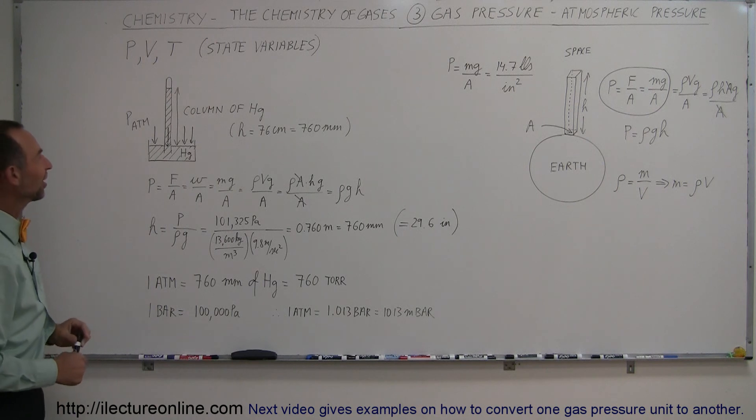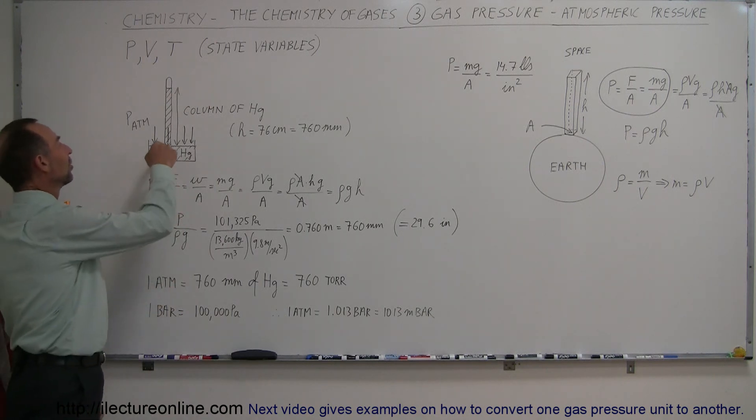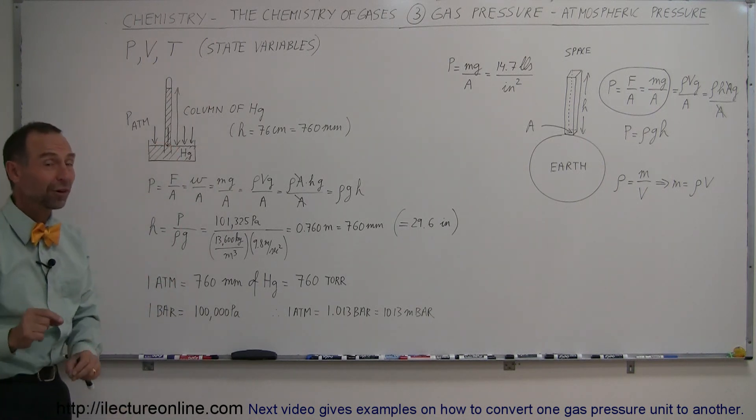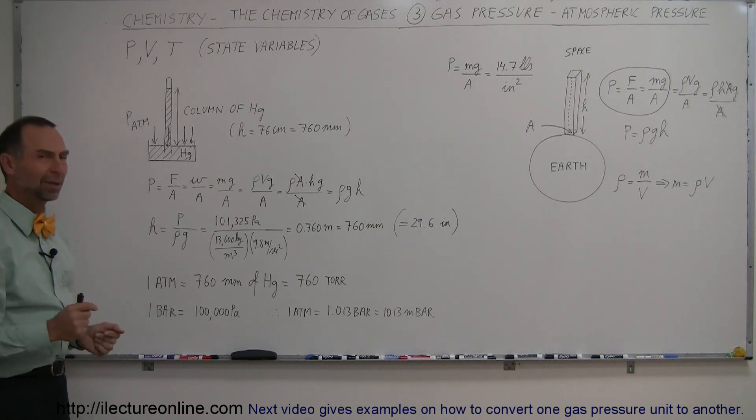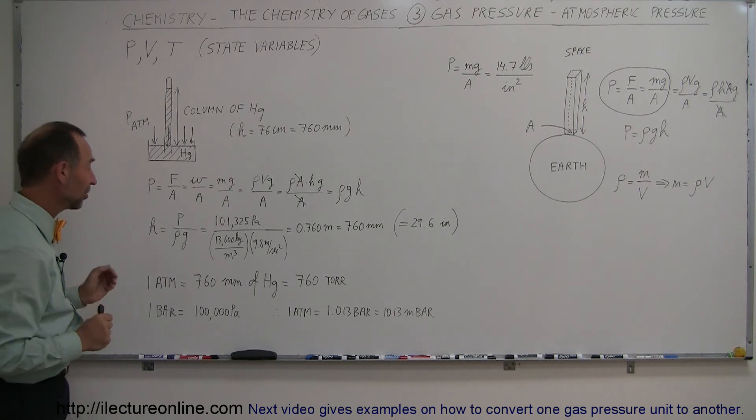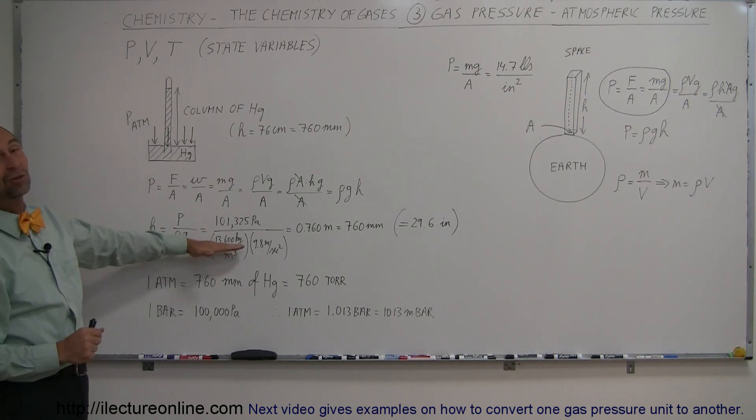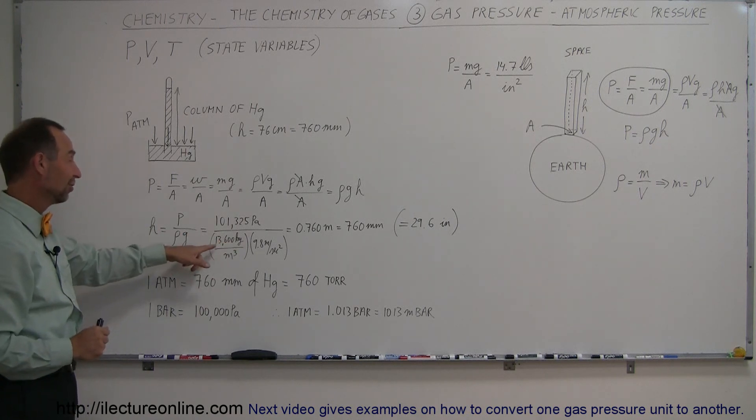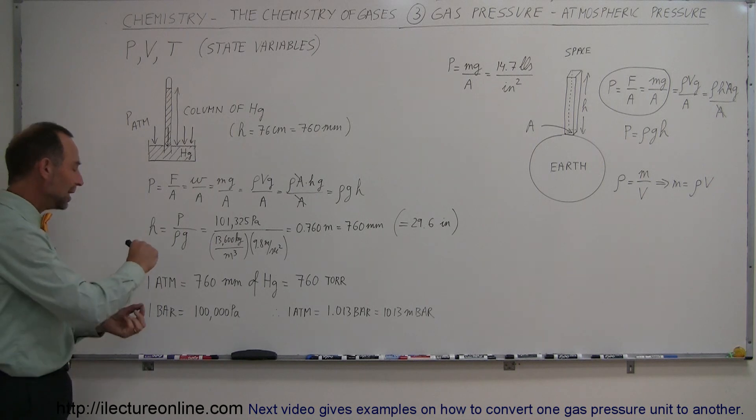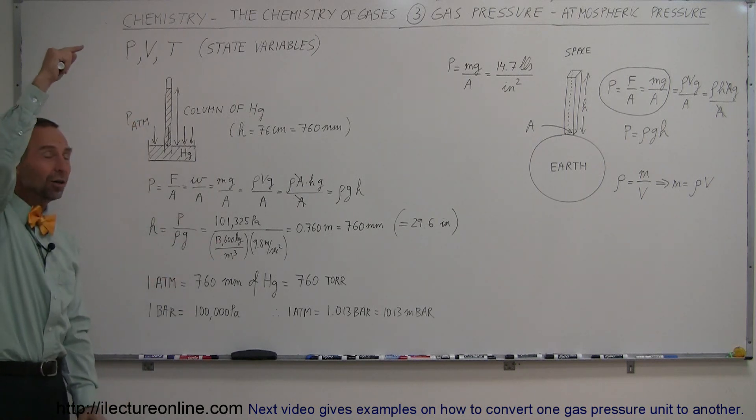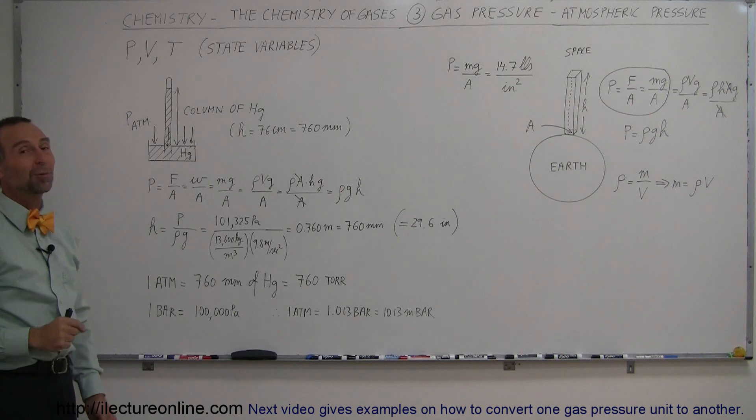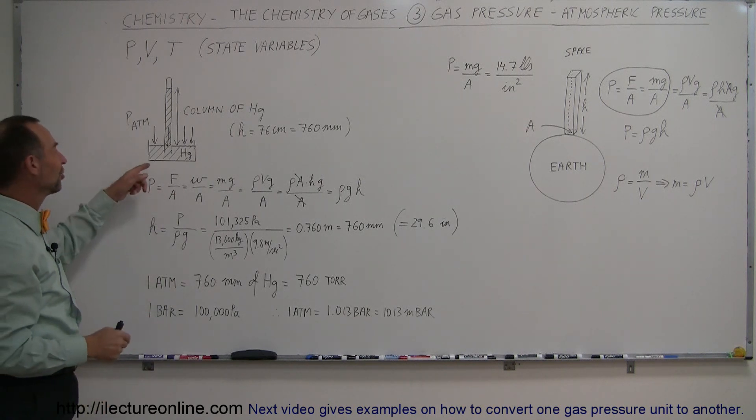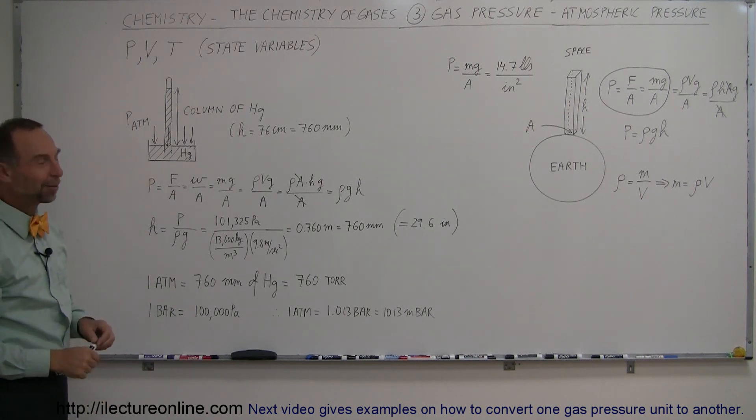One little interesting concept is what if we replaced the mercury with water? Could we do that very same experiment? And the answer is yes, but then you need a much longer tube because the density of water is not nearly as much as the density of mercury. Matter of fact, since water is only 1,000 kilograms per cubic meter, you would need a tube 13.6 times as long, and you could do that very same experiment with water. You can see why Torricelli chose mercury instead of water.